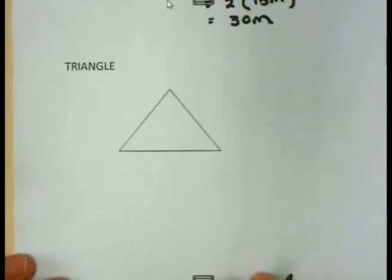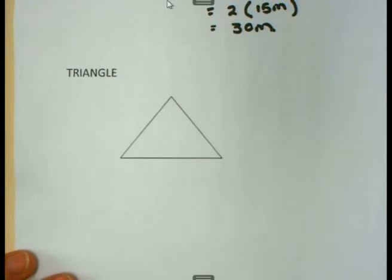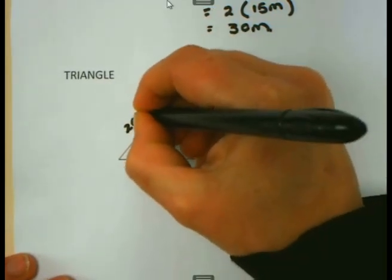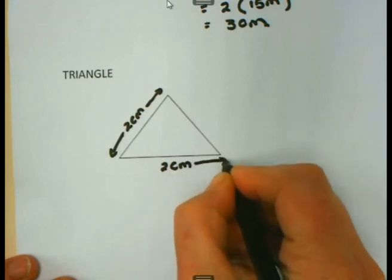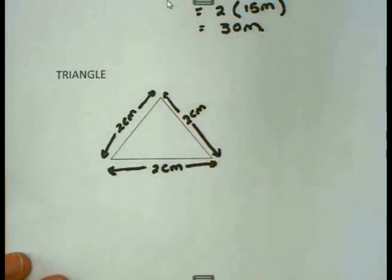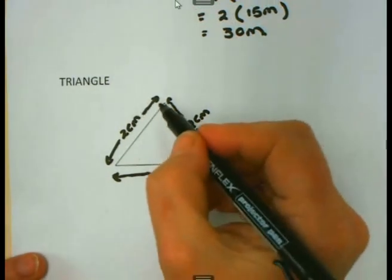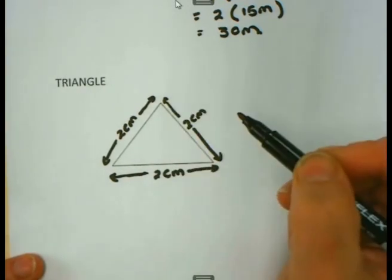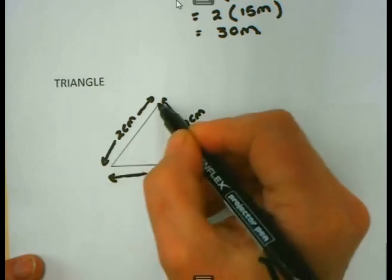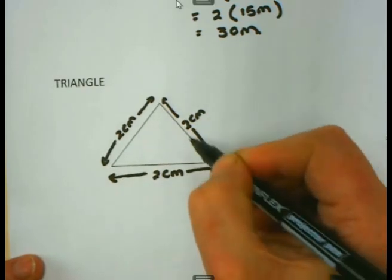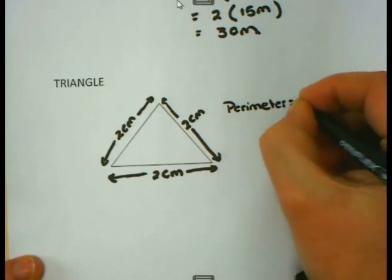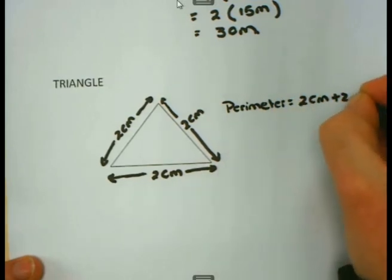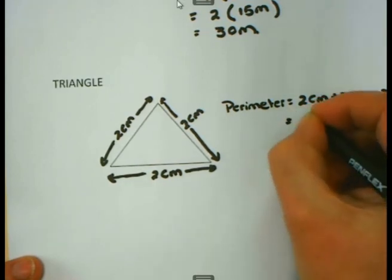Let us now also discuss a triangle. Say for instance I have a triangle where the side length of each one of these triangle sides is 2 cm. This side length is 2 cm, this one here is also 2 cm, and this one here is also 2 cm. When I want to work out the perimeter, again I am concerned with this outside border — I need to work out what the length is if I go around the outside border. So in principle, I will be saying 2 cm plus 2 cm plus 2 cm and get 6 cm.